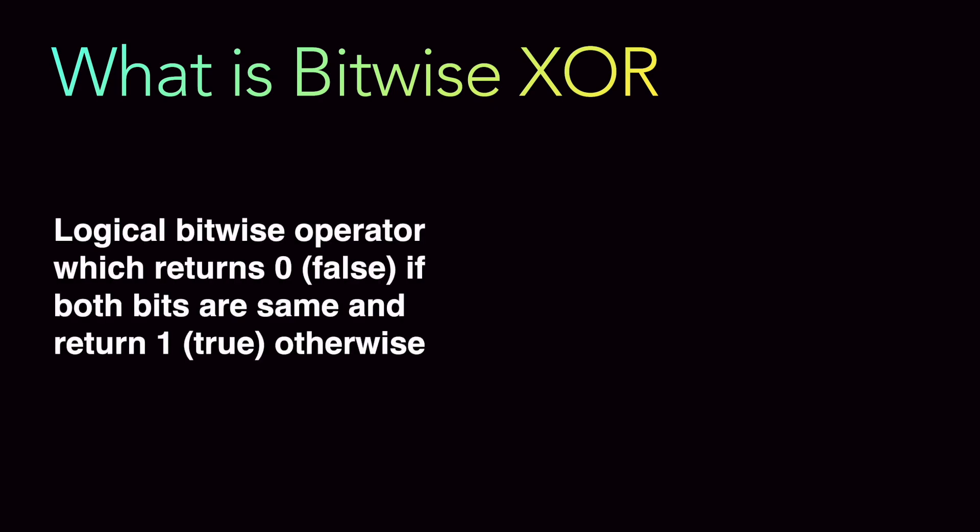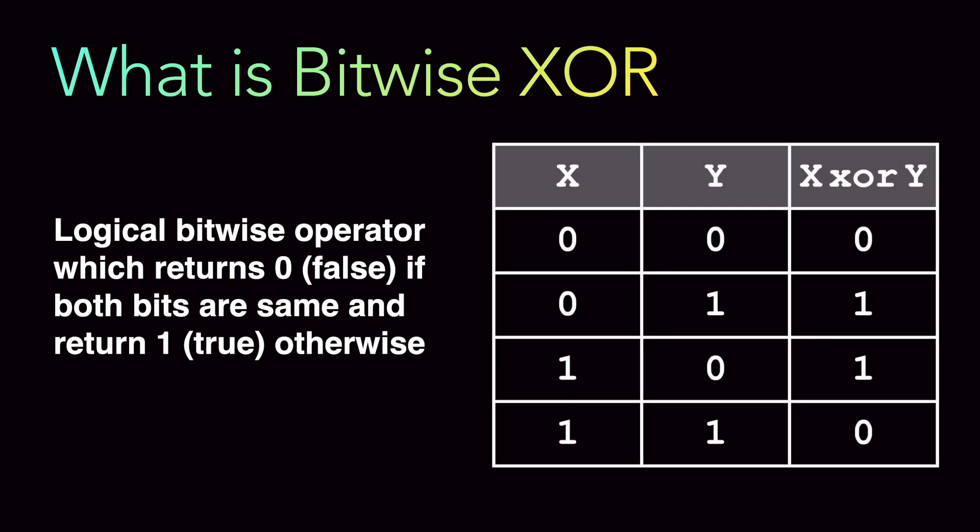So what is bitwise XOR? Bitwise XOR is a logical bitwise operator that returns a zero — that is false — if both bits are the same, and returns a one — that is true — if both bits are different. To understand this, I'm hoping you already have some background knowledge around how bitwise operators work and logical gates.